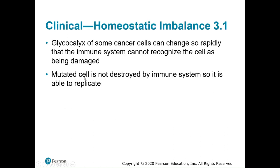The glycocalyx of some cancer cells can change so rapidly that the immune system cannot recognize the cell as being damaged. When the sugary coating keeps changing and reinvigorating itself, the immune system can't detect that the internal framework is being mutated. Some bacteria do this as well — this constant changing manipulates the immune system, allowing the cancer cell to continue dividing and spreading throughout the body.